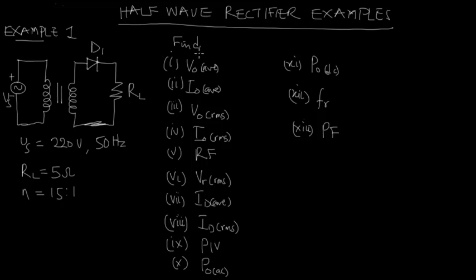We are asked to find: the average output voltage V_out average, the average load current I_out average, the RMS load voltage V_out RMS, the RMS load current I_out RMS, the ripple factor of the output voltage, the RMS ripple voltage, the diode average current ID average, the RMS diode current ID RMS, and the peak inverse voltage of the diode, the AC output power P_out AC, and the DC output power P_out DC.